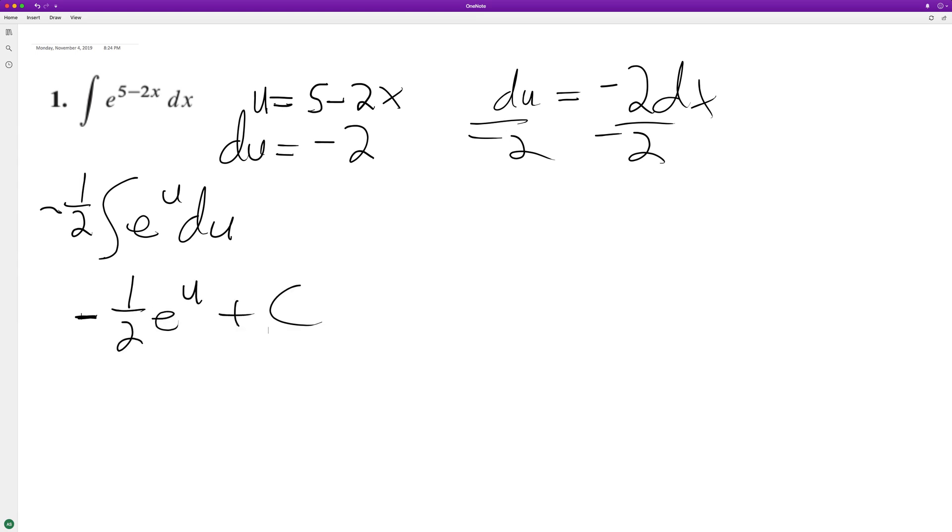But now, since we got this figured out, we can substitute back in for u. So we have negative 1 half e raised to the 5 minus 2x plus C. And that's it.